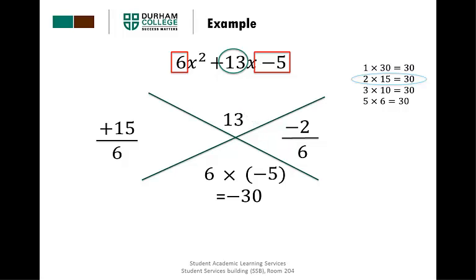Once we have our two fractions, we now want to convert them to lowest terms. So on the left-hand side, we have 15 over 6. Dividing both of those by 3, we get 5 over 2. And on the right-hand side, we have negative 2 over 6. Dividing both of them by 2 will give us negative 1 over 3.